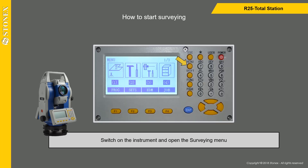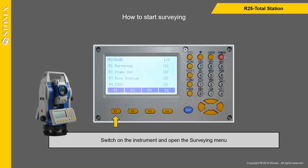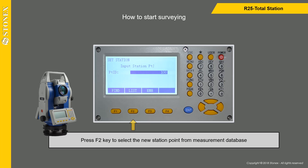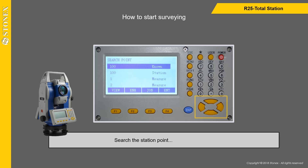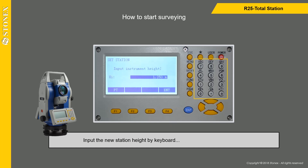Switch on the instrument and open the surveying menu. Press F2 key to set the station point. Press F2 key to select the new station point from the measurement database. Search the station point and press F4 key. Input the new station height by keyboard and press F4 key to confirm.